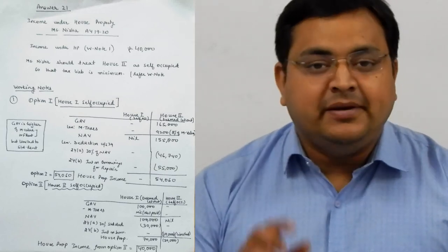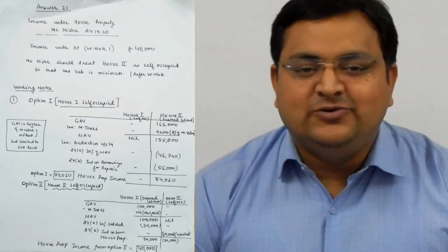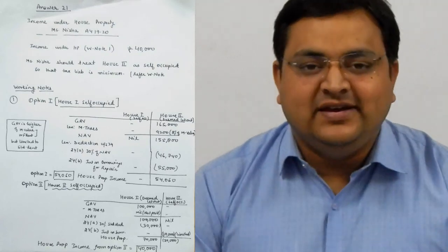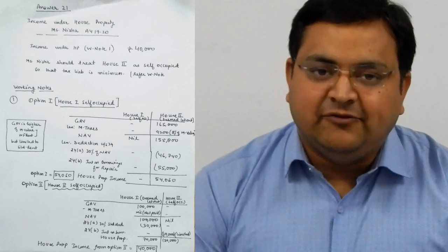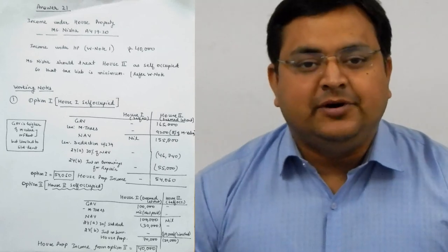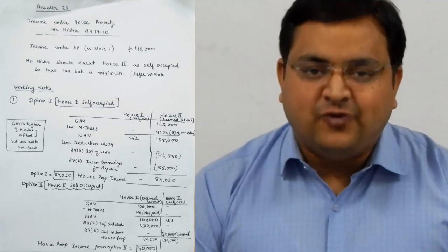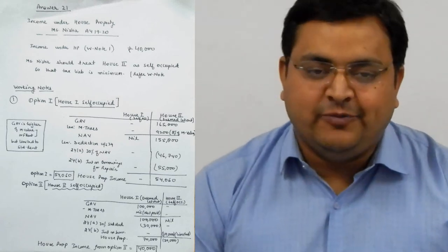In this way, the main answer, where you have 3-4 blank spaces, write there that your income from house property is 40,000 rupees and you will choose option number 2, house 1 as deemed let out and house 2 as self-occupied. I hope you are getting the complete question, thank you so much.